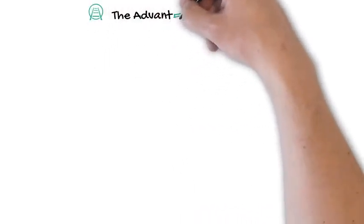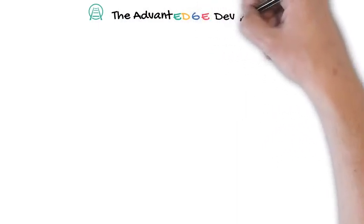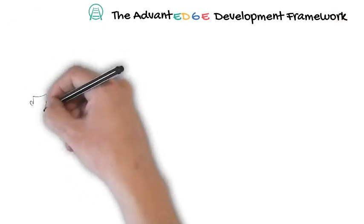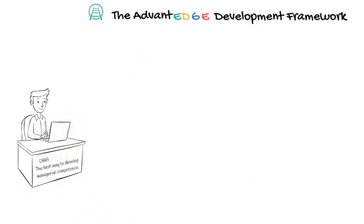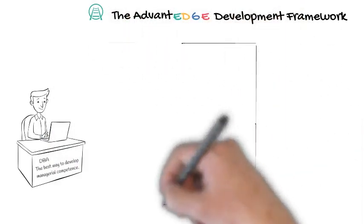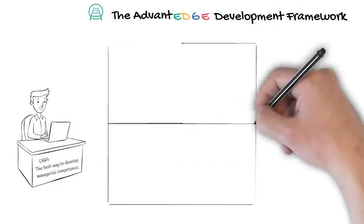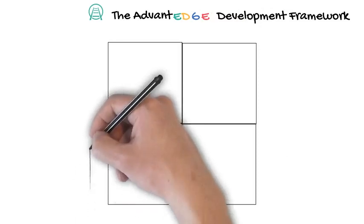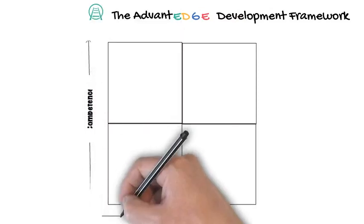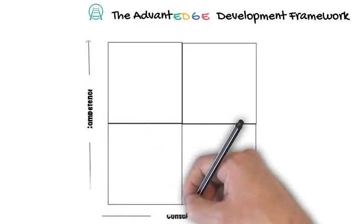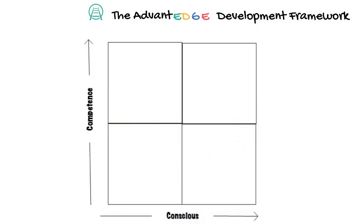The Advantage Development Process, or framework, evolved from doctoral research into the best way to develop managerial and leadership competence. We can plot the four key stages of competence development on a simple two-by-two matrix. The vertical axis represents our competence in something, and the horizontal axis represents our consciousness of being able to do that thing.